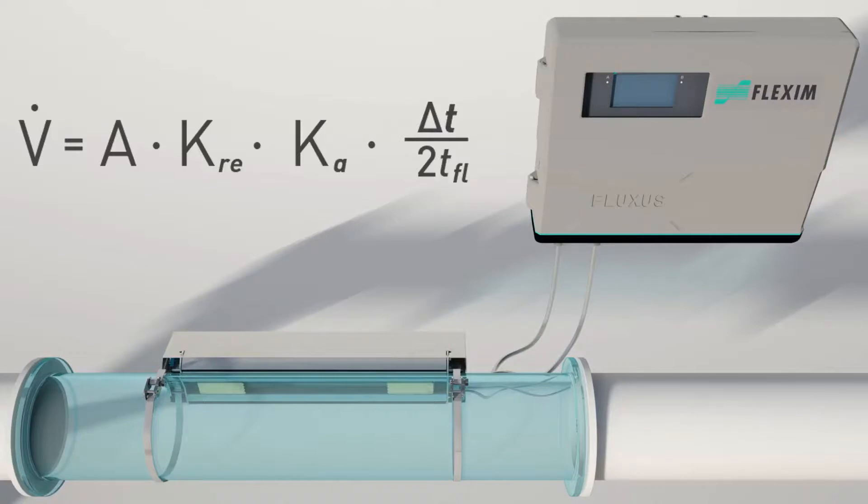The factory calibration includes the calibration of the transducers to determine the transducer constant k-alpha, as well as the transmitter to verify the measured transit times.